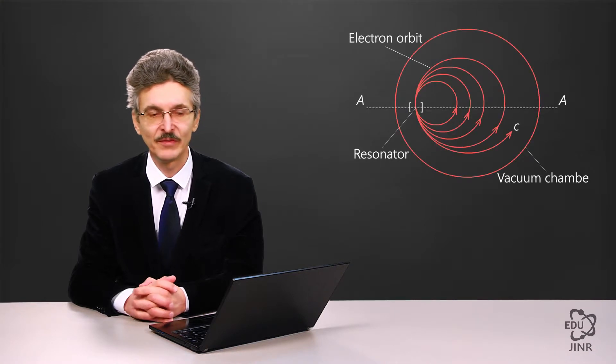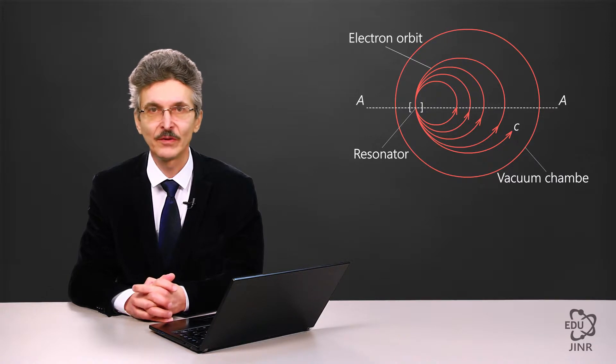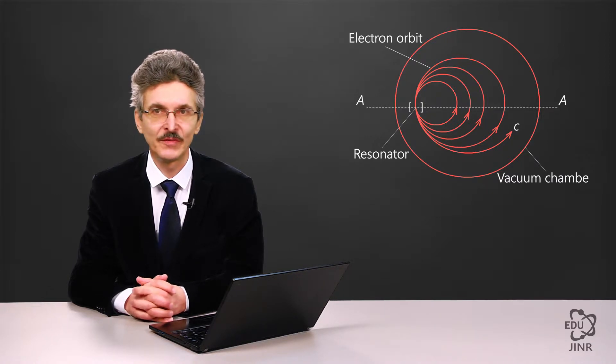In a nutshell, how a microtron works could be explained with a basic picture. There is a bending magnet creating a homogeneous rotating field with a resonator on its edge.